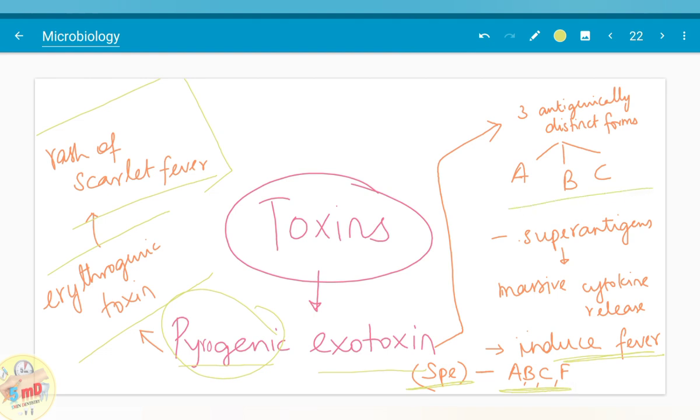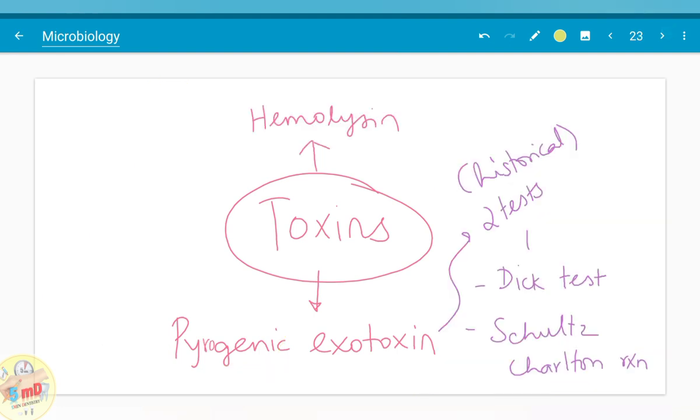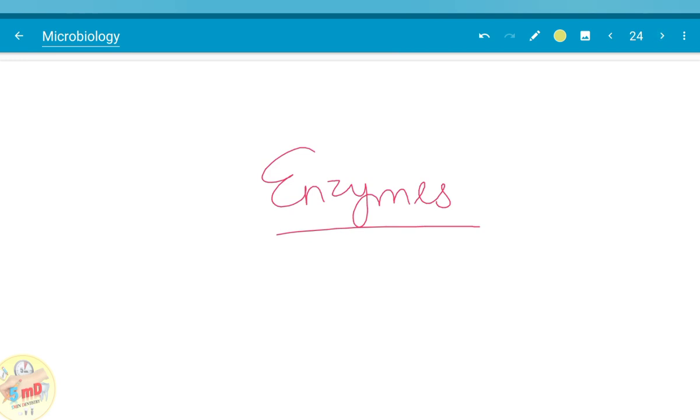These are also super antigens because massive cytokine release is seen following the release of this exotoxin. Historically, two tests were done with the help of this exotoxin: Dick's test and Schultz-Charlton reaction. These two reactions are currently not used in diagnosis.